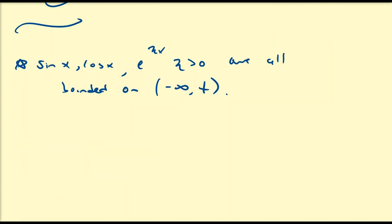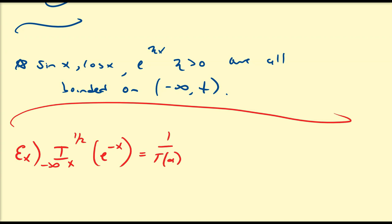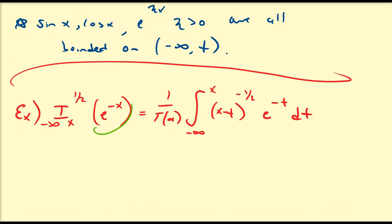Now let's look at a fractional differintegral of a function that possibly is not bounded on that interval. Let's compute the RL differintegral from minus infinity to x of order one half of e to the minus x. Using the definition, that's 1 over gamma of one half, times the integral from minus infinity to x of (x minus t)^(negative one half) times e to the minus t, dt. We can't use our property here because eta equals minus one, which is not greater than zero, so we can't apply that identity directly.